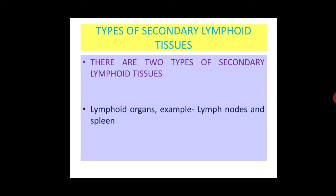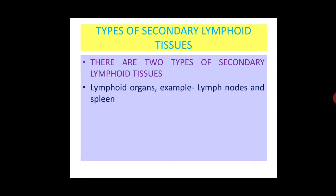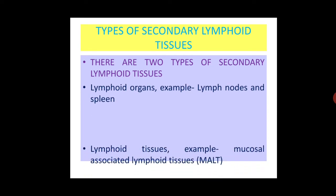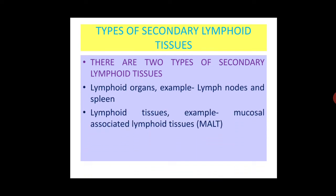There are two types of secondary lymphoid tissues: lymphoid organs and lymphoid tissues. Examples of lymphoid organs are lymph nodes and spleen, while an example of lymphoid tissue is mucosal-associated lymphoid tissue.